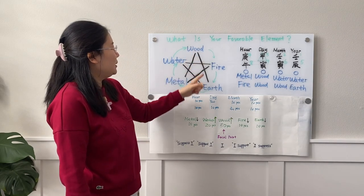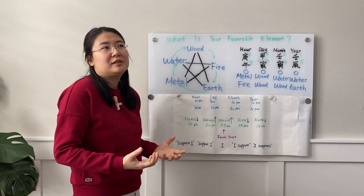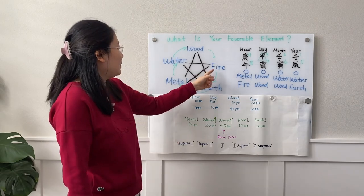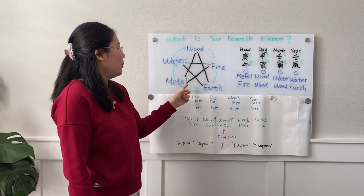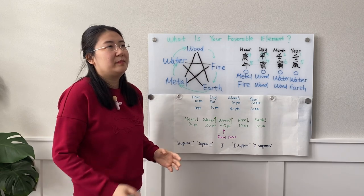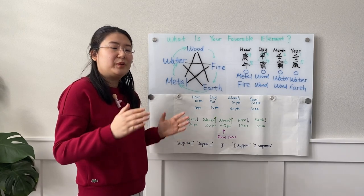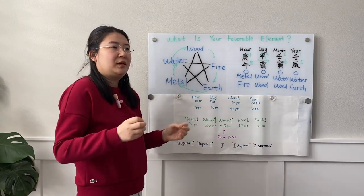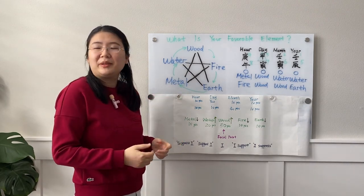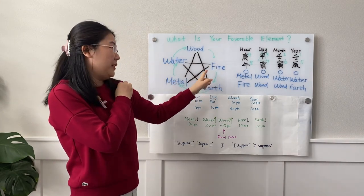On the suppressing side: wood suppresses earth because it sucks up all the nutrition from the earth — it's reducing it. Fire suppresses metal because fire will burn and hurt the metal energy. Earth suppresses water — think about a big river flooding; you control the flood by building a dam with dirt material. Metal suppresses wood — you use metal to trim and cut plants or trees. And water suppresses fire — that's fairly straightforward.